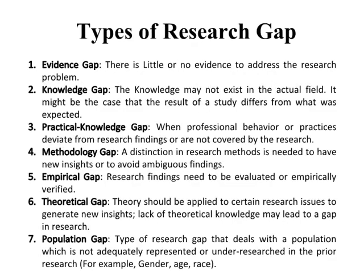Types of research gap. There are seven types of research gap: evidence gap, knowledge gap, practical knowledge gap, methodological gap, empirical gap, theoretical gap, and population gap.